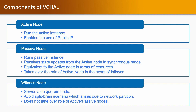Passive node: it runs the passive instance and receives updates from the active node in synchronous mode. It is equivalent to the active node in terms of resources and takes over the role of the active node if vCenter fails. If the currently active vCenter has an issue, it will failover to the passive node, the passive will become active, and users will be able to access the vCenter server the same as before.